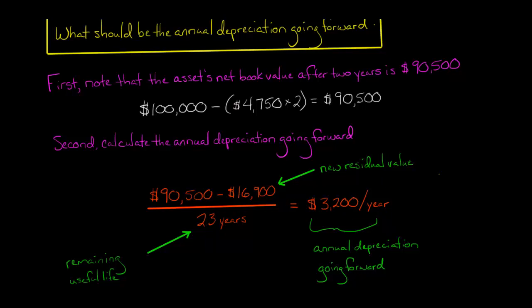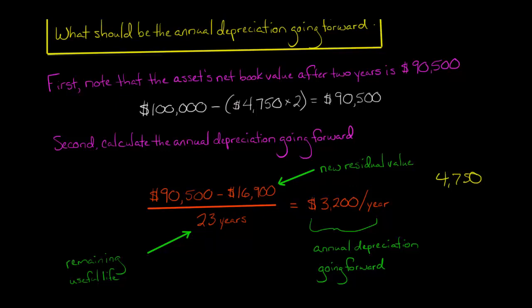Before, they were taking $4,750 of depreciation a year, and now the amount is lower. Why? They have a higher estimated useful life, but also a higher residual value. So when management increases its estimated useful life and the estimated residual value, that results in lower annual depreciation.